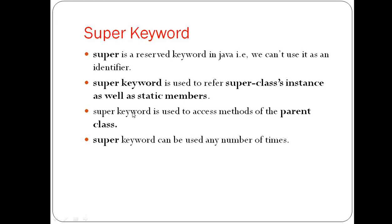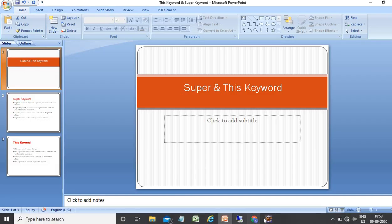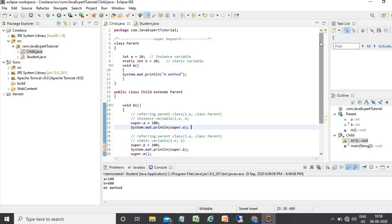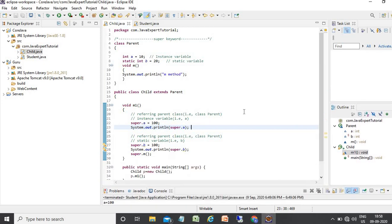The super keyword is used to refer to super class instance as well as static members. It is also used to access methods of the parent class — you can access parent class data members and methods from a child class using the super keyword. There is no limitation on how many times you can use the super keyword.